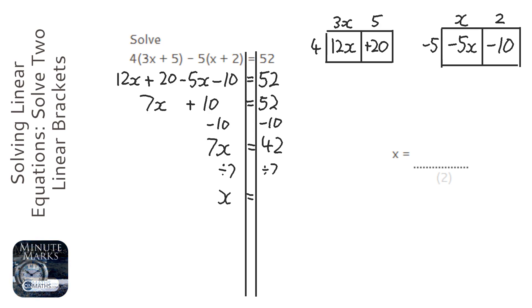So x equals 42 divided by 7 is 6. So now the answer is 6. You can, if you have time, put 6 into the question and see whether you get the answer of 52, which we do.